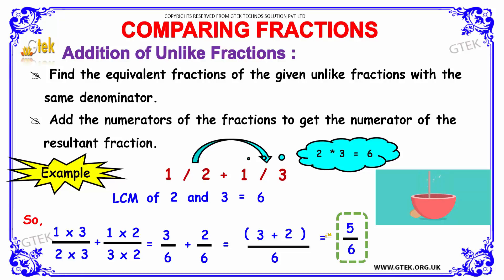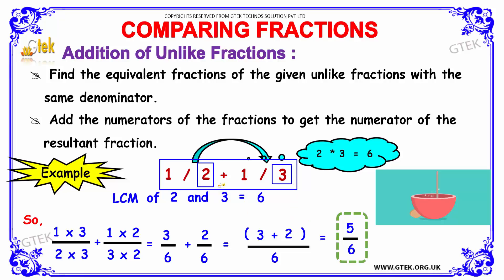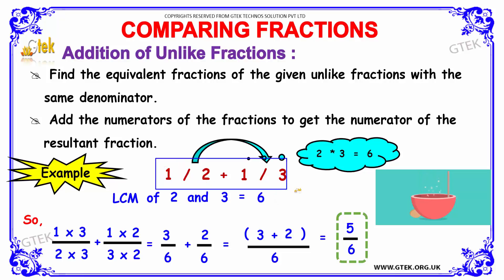Now we discuss addition of unlike fractions. Unlike fractions have different denominators — for example, 1 divided by 2 plus 1 divided by 3, where 2 and 3 are not the same. Before calculating, we need to find the equivalent fractions of the given unlike fractions with the same denominator, then simply add the numerators to get the numerator of the resultant fraction.